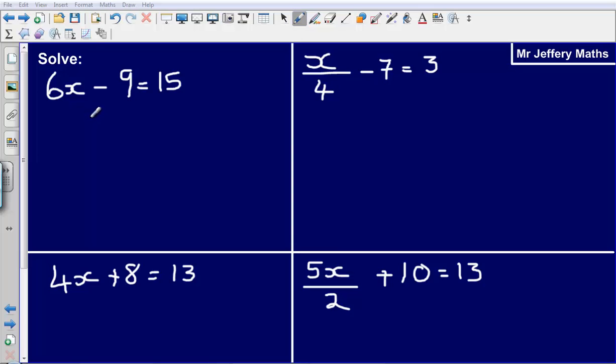Hello and welcome to another video taking a look at solving equations. Here I have 6x minus 9 is equal to 15. This is slightly more difficult than the previous examples because we've got two things going on.